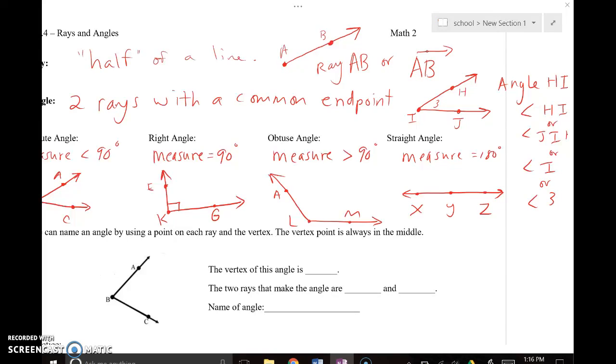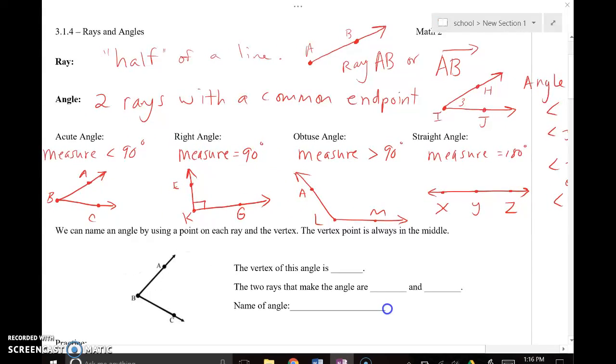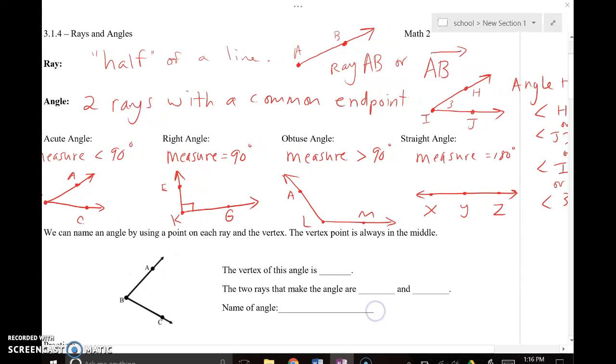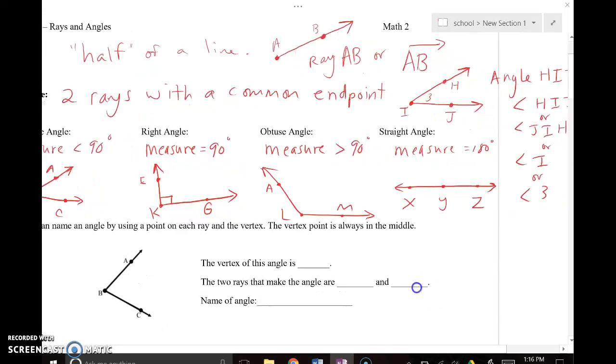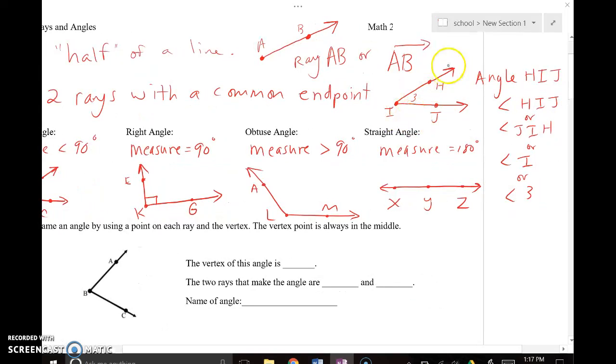Next we're going to talk about using rays to create angles. An angle occurs when two rays have a common endpoint. So, if you take a look at this example of angle HIJ, I could also call it angle JIH, I could also call it angle I, I could even call it angle 3. All four of these names notice that we have an emphasis on this point here, which is called the vertex.